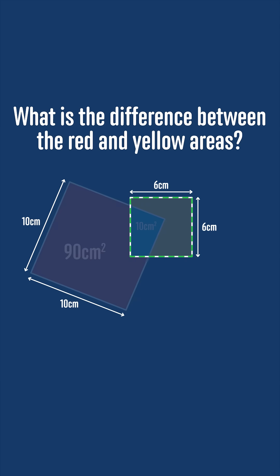The smaller square has area 6 times 6, which is 36 centimeters squared, and so the yellow region would have area 36 minus 10, or 26 centimeters squared.